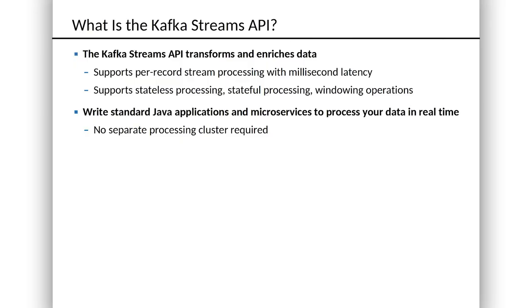This lets you develop in whatever system you want — Mac, Windows, Linux, the IDE of your choice. This is a Java API and there are no real other constraints on how you want to run. If you need to run just locally on a single-node Kafka cluster deployed on your development machine, easy, no problem. Exactly the same code that will run in production can run on that one local node.